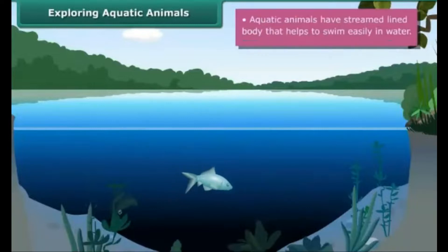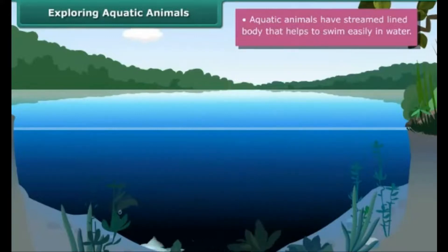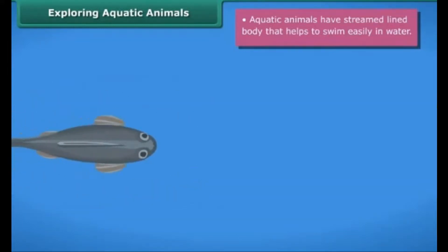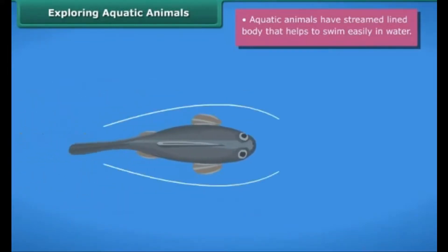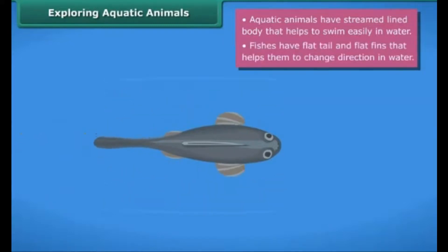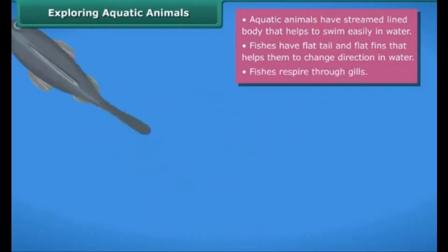Aquatic animals have special features and adaptations that help them to survive and live in aquatic habitats. Aquatic animals like fishes have a streamlined body that helps them to swim easily in water. Fishes have a flat tail and flat fins that help them to change direction in water. Fishes respire through gills.